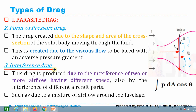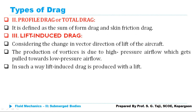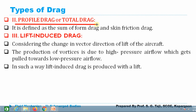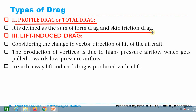Another type of parasite drag is interference drag. Interference drag exists when two or more airflows having different velocities interfere with each other — this kind of drag is generated at the junction of the wings of an aeroplane. Profile drag or total drag is the sum of form drag and skin friction drag.